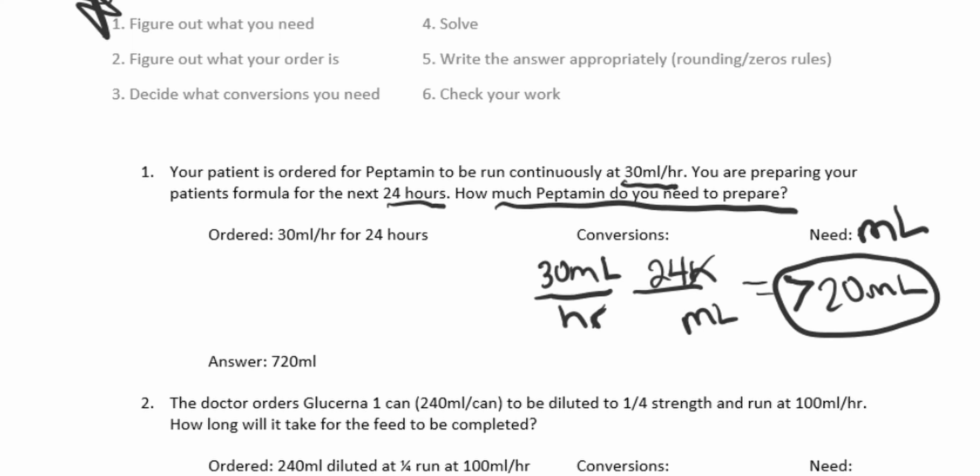So what we did: we needed mLs, we had 30 mLs per hour, and we needed it for 24 hours. So we were able to get 720 mLs total, which is what we need to prepare.